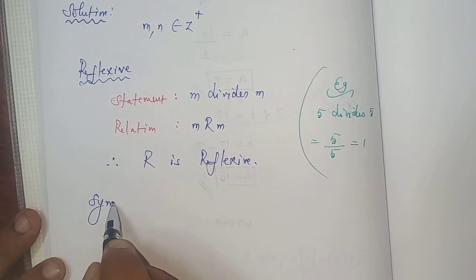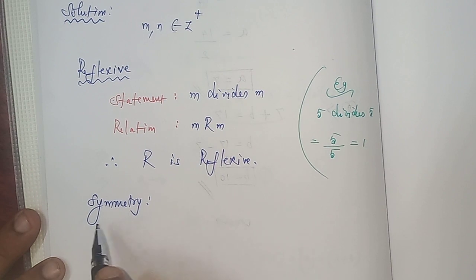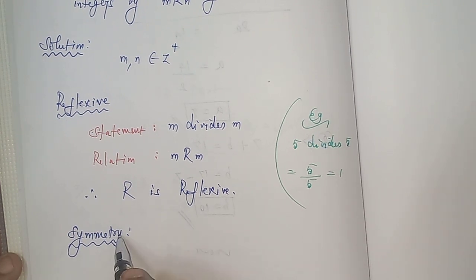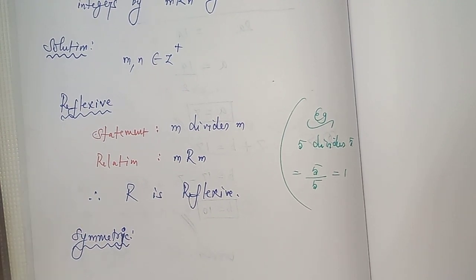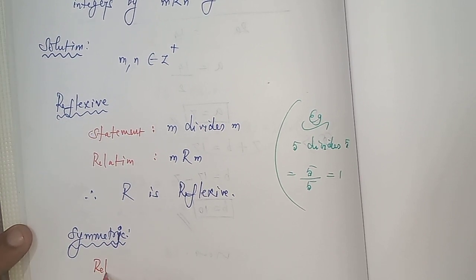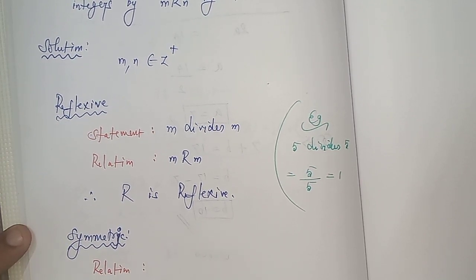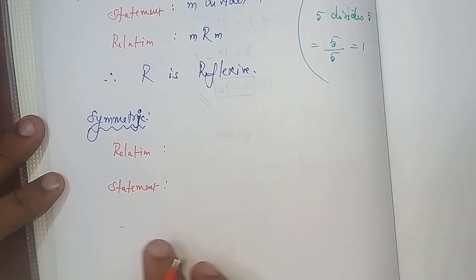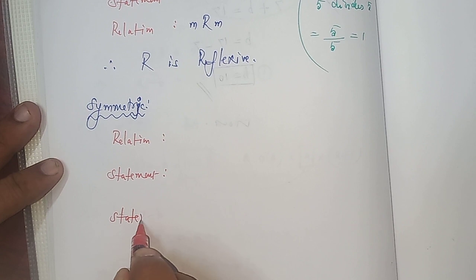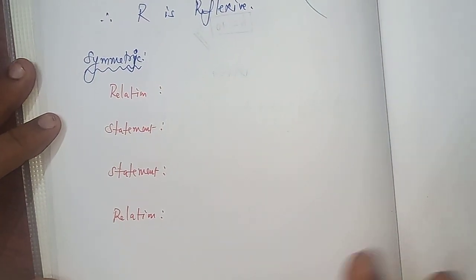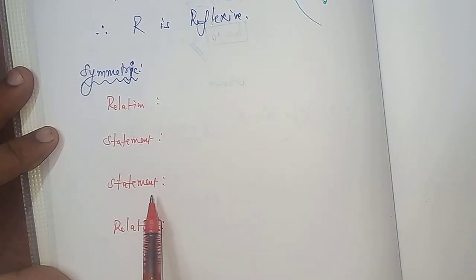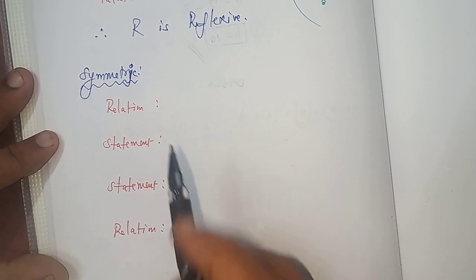Next, symmetric. For symmetric, the order is: first write the relation, then the statement, then the reverse statement, and finally the relation. That is: relation → statement → statement → relation. This is the order.